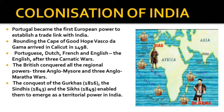Colonization of India: Towards the close of the 15th century, Portugal became the first European power to establish a trade link with India. Rounding the Cape of Good Hope, Vasco da Gama arrived in Calicut in 1498. Soon other European powers joined Portugal. The rivalry among four major European powers — Portuguese, Dutch, French and English — saw the English eliminate the French through the three Carnatic Wars by the end of the 18th century. The British conquered regional powers including the Mysore Sultans and the Marathas. The conquest of the Gurkhas in 1816, the Sindhis in 1843, and the Sikhs in 1849 enabled them to emerge as the dominant territorial power in India.